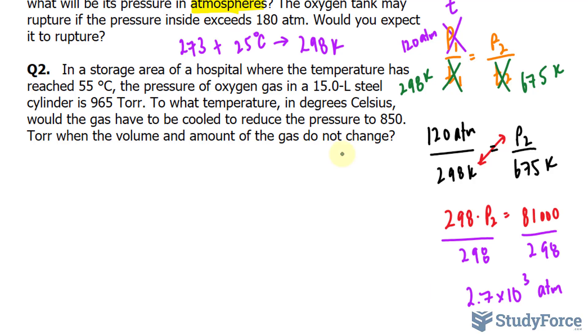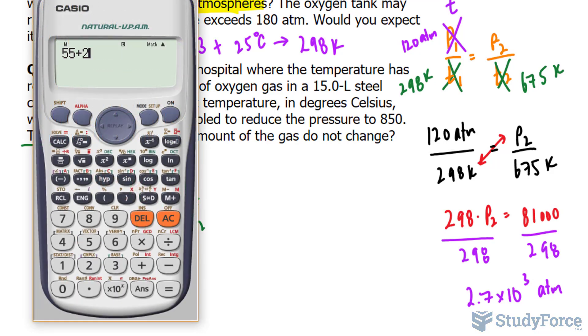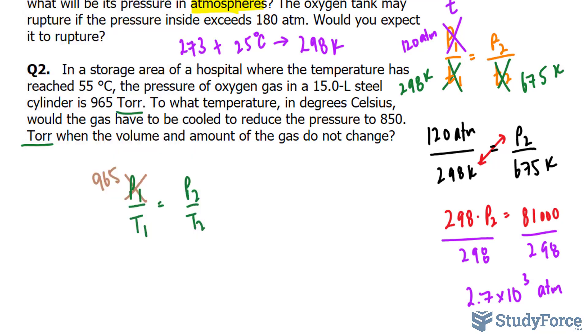So once again, we have consistent units. We don't have to worry about any conversions. We'll be using again the Gay-Lussac formula. So I'll rewrite that, p sub 1 over t sub 1, p sub 2 over t sub 2. The pressure is 965, so that changes with 965. The temperature is 55 plus 273. 55 plus 273 is 328.